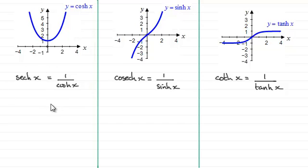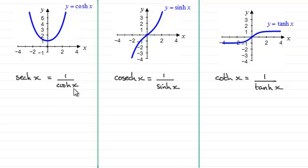I'll take you through y equals sech x, and then maybe you'd like to have a go at y equals cosech x and y equals coth x, then come back and check your answers with mine. We'll start with y equals sech x, which is defined as one over cosh x. When x equals zero, cosh x equals one, so we get one divided by one, which gives us one. So the curve must pass through this point here.